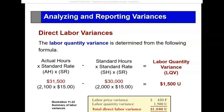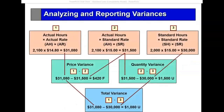Again, a different way of analyzing is to set up the matrix: Box 1 is actual hours times actual rate; Box 3 is standard hours times standard rate. The total variance is the difference between those two and it's unfavorable. Now look at the price variance — right is greater than left, so it's favorable. The usage or quantity variance is unfavorable.